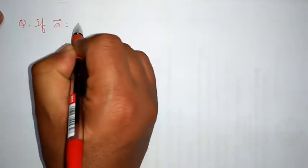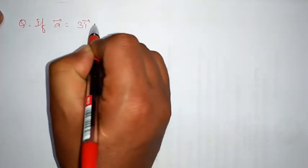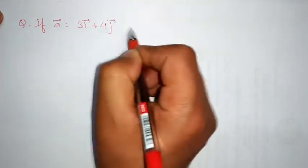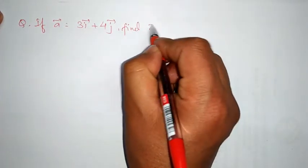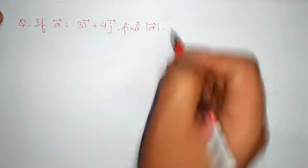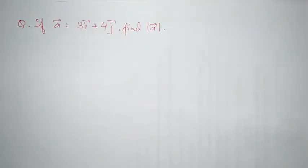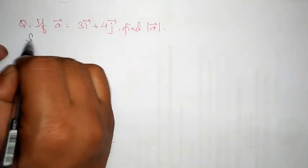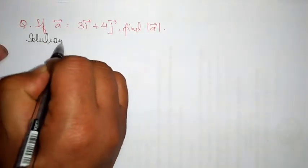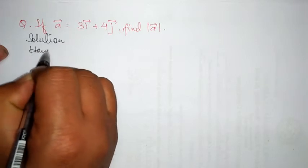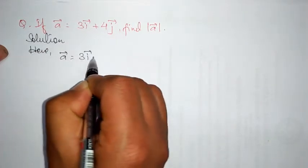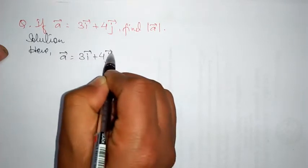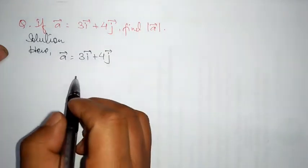If vector a equals 3i plus 4j, find the magnitude of vector a. Solution: here, vector a is equals to 3i plus 4j.